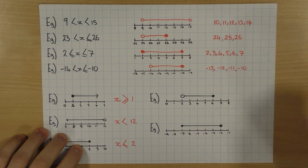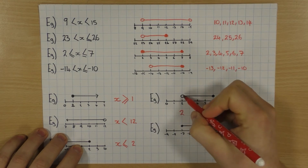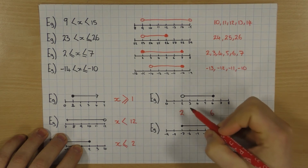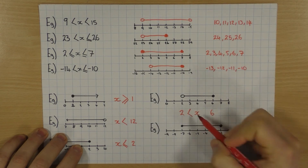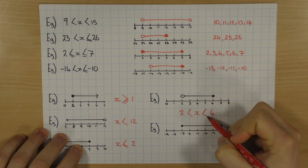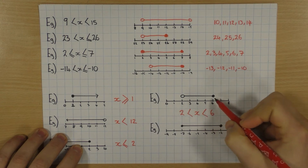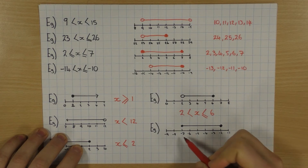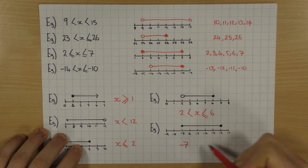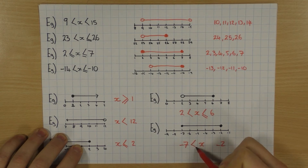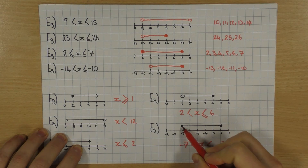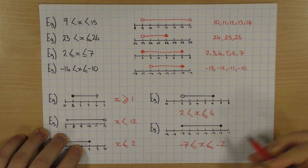Finally, going back to these ones: I'm going to have a 2 and a 6, because that's where I've got circles. x is going to be bigger than 2, so I'm pointing at 2, and x is going to be less than 6, so I put it pointing at x. That one's a solid dot — so it's equal to, so I add my line. Same thing here: I've got minus 7 and minus 2. x is bigger than minus 7, so I'm pointing at minus 7, but x is less than minus 2, so I point to x. Both are coloured in, so both are equal to — I add my equal to signs.